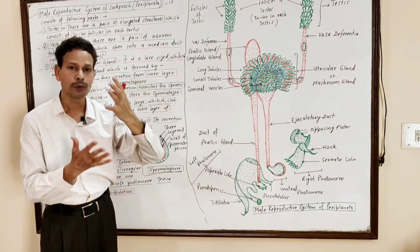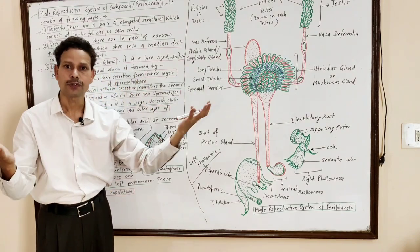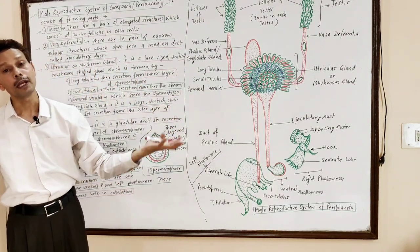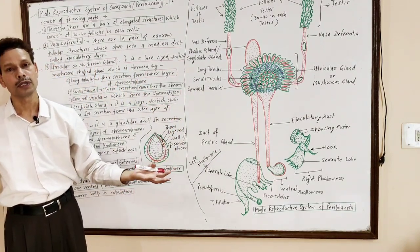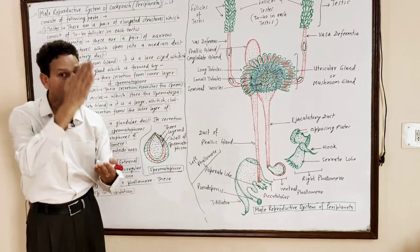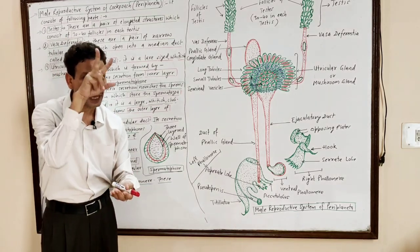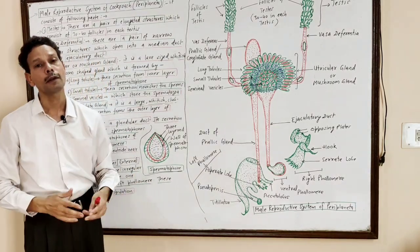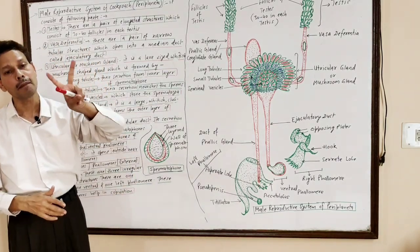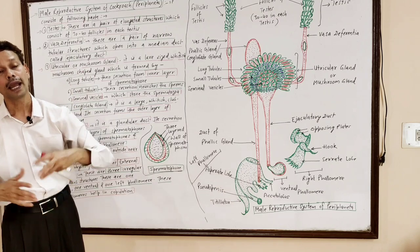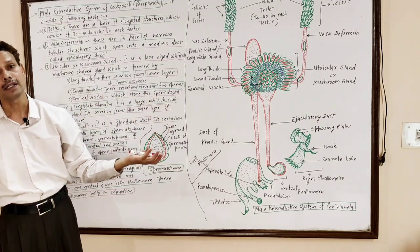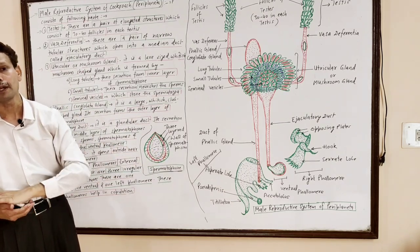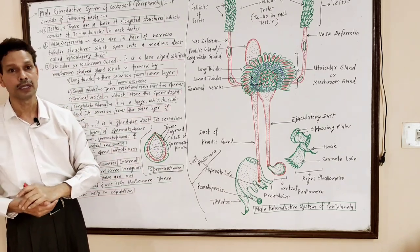Externally, we can distinguish male and female cockroach very easily. In the case of male cockroach, the terminal posterior part possesses a pair of needle-like anal styles, which are absent in the case of female cockroach.